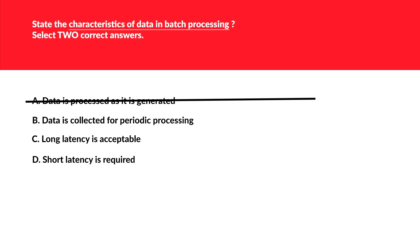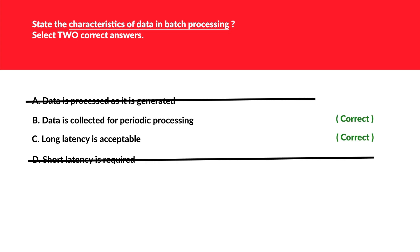The second option is 'data is collected for periodic processing' — this looks correct because batch processing is always periodic or scheduled. The third option is 'long latency is acceptable' — this is also true because short latency is for streaming workloads. So option D is wrong. These two are the correct options for this question.